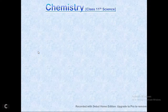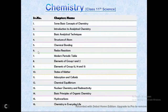For chemistry, you have 14 chapters: basic concepts of chemistry, analytical chemistry and basic analytical techniques, structure of atom, chemical bonding, redox reactions, modern periodic table, elements of group 1 and 2, elements of groups 13 to 15, states of matter, adsorption and colloids, chemical equilibrium, nuclear chemistry and radioactivity, basic principles of organic chemistry, and hydrocarbons.